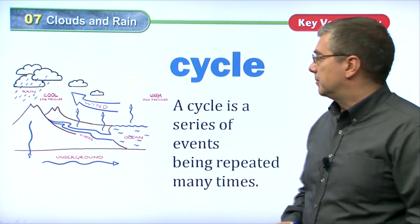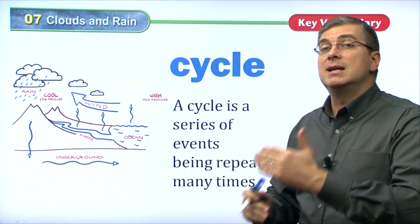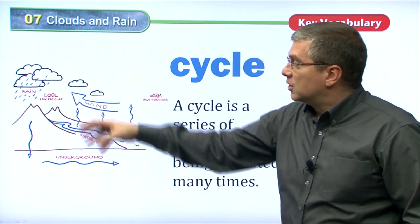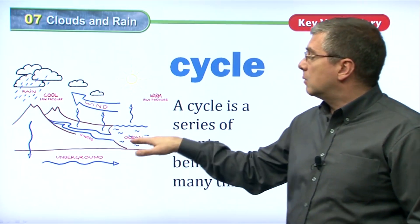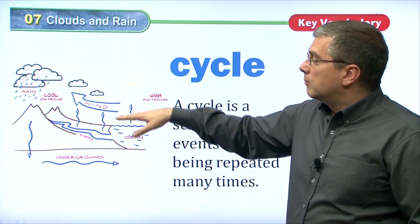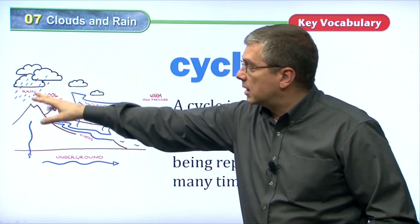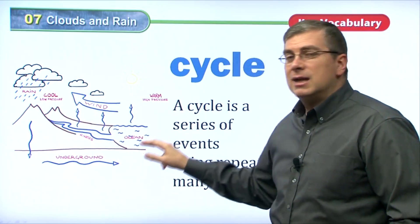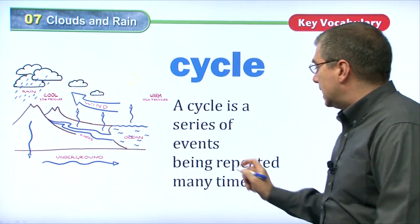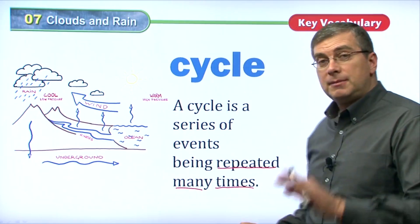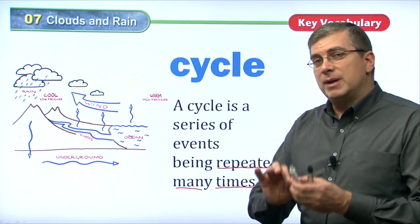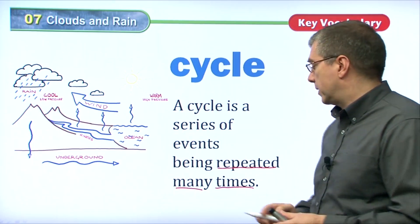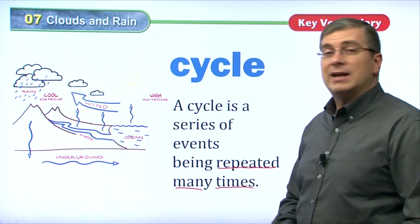A cycle is a series of events being repeated many times. If we're talking about water, this looks like a very complicated diagram. But basically, we can start off with the ocean — it gets warm, the water moves up into the atmosphere, it cools down, it comes down as rain, it goes underground, and back into the ocean. A cycle is a process or a series of events that repeats over and over again, just like the human life cycle — somebody goes from infant to adult, adults have babies, and the cycle starts again.